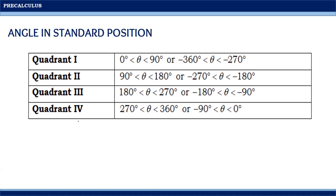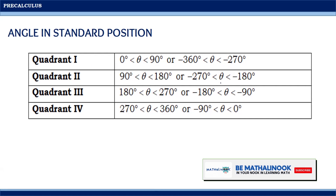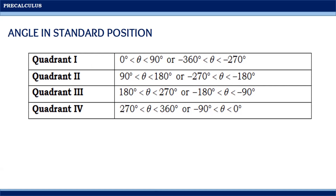On the other hand, if the rotation of the terminal side is in the clockwise direction, then it generates negative angles. Therefore, if the measurement of the angle is between negative 360 degrees and negative 270 degrees, then it lies in quadrant one. If the angle measures between negative 270 degrees and negative 180 degrees, then it lies in quadrant two. If the angle is between negative 90 degrees and 0 degrees, then it lies in quadrant four.